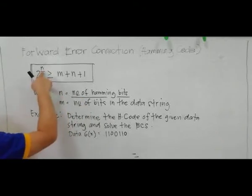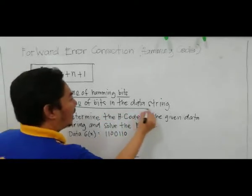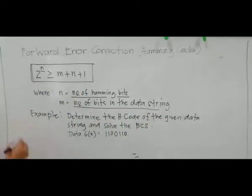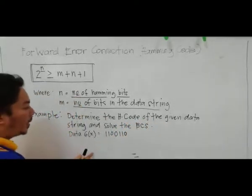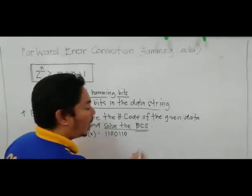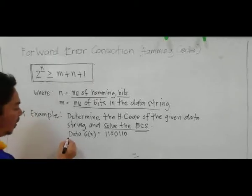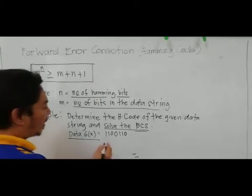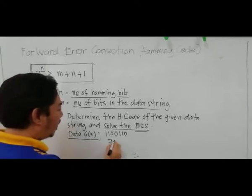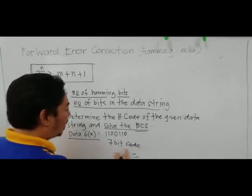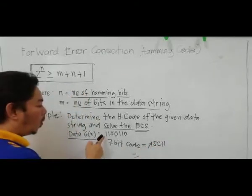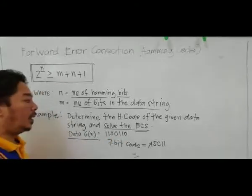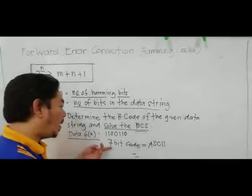In this formula, n is the number of Hamming bits and m is the number of bits in the data string. For example number one: determine the Hamming code of the given data string, and solve for the BCS (block check sequence). The given data is a seven-bit code, which may be an ASCII code.